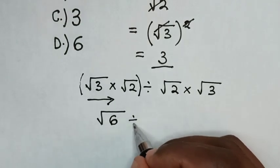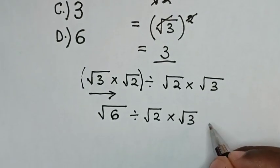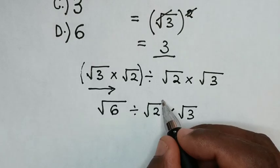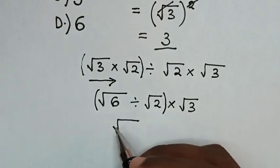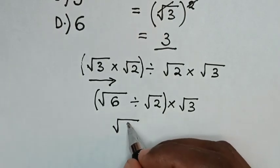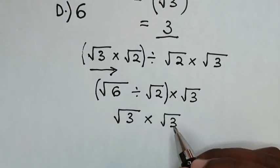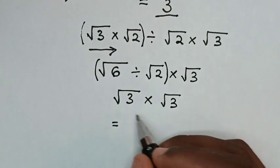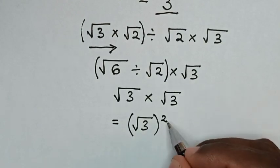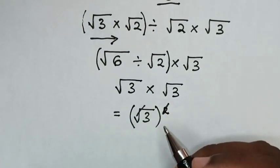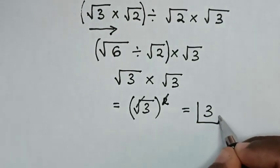Then square root of 3 times square root of 3, written as square root of 3 bracket squared. So this square will cancel with this square root, then it will be equal to 3. Therefore this is our final answer.